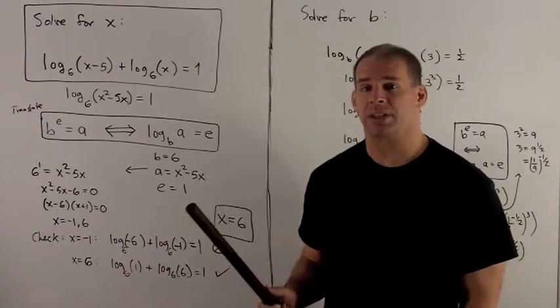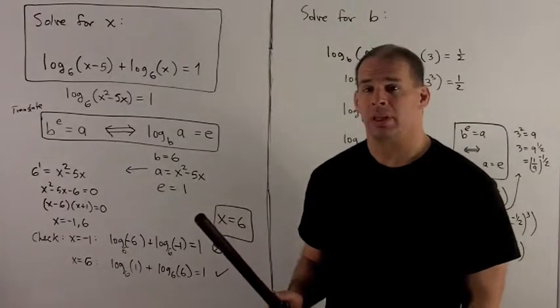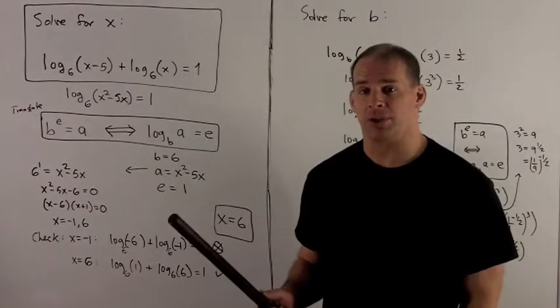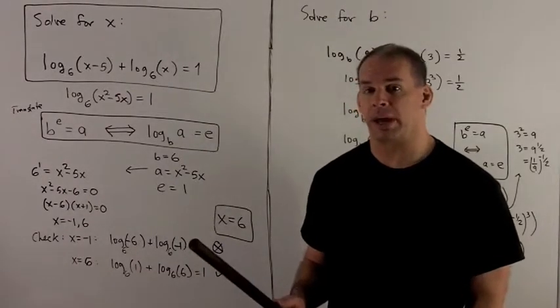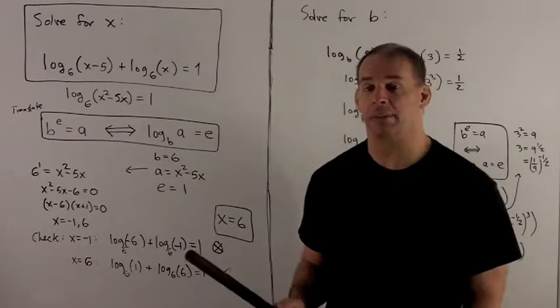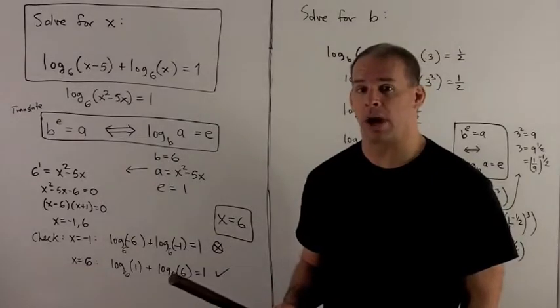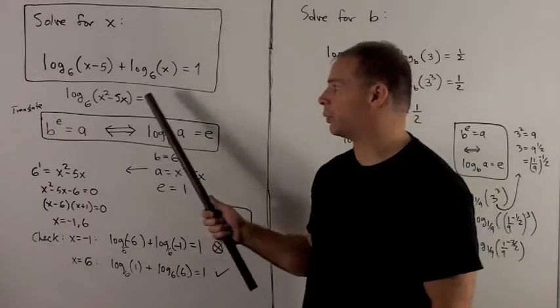Since we have the same base for our logs, we're allowed to take that sum and turn it into a product. So my first step is to turn this into log base 6 of x squared minus 5x equals 1.